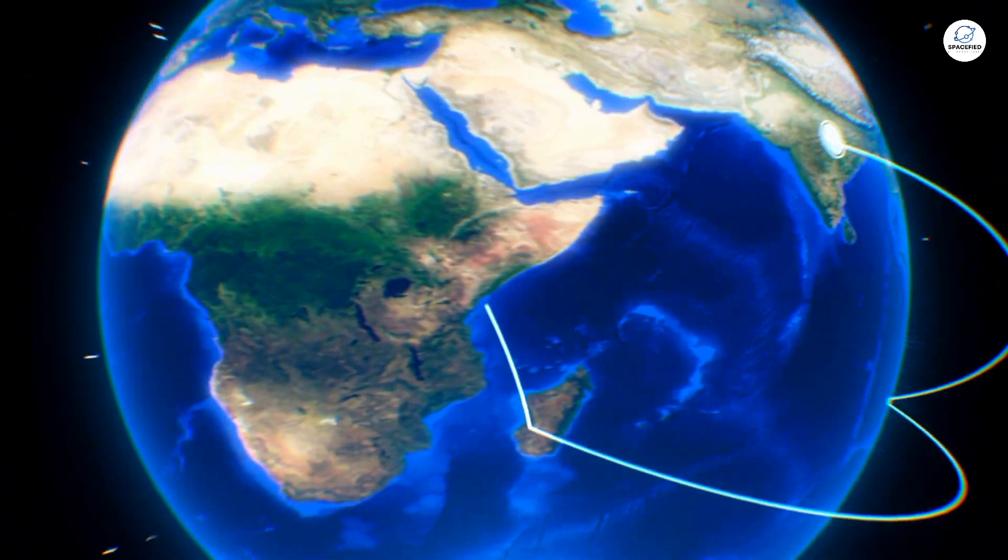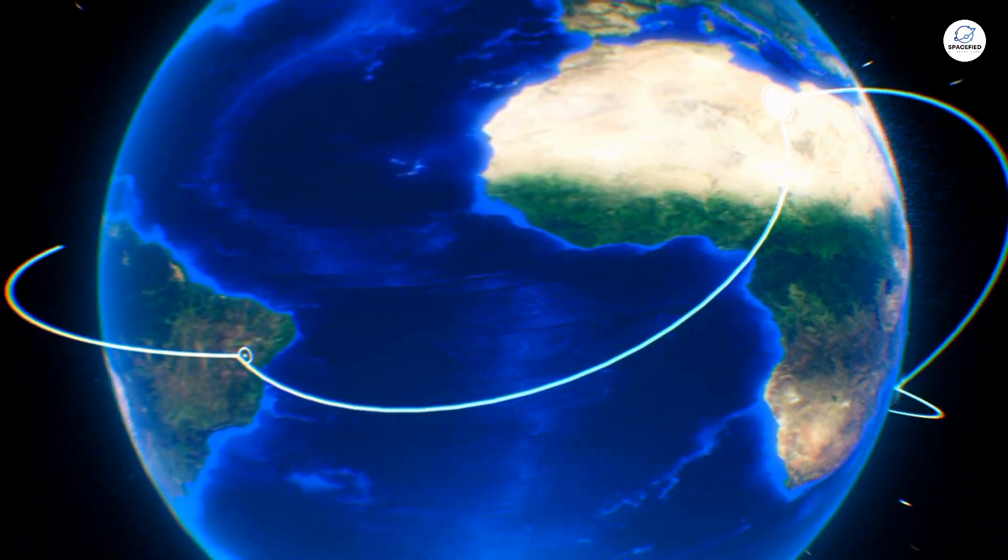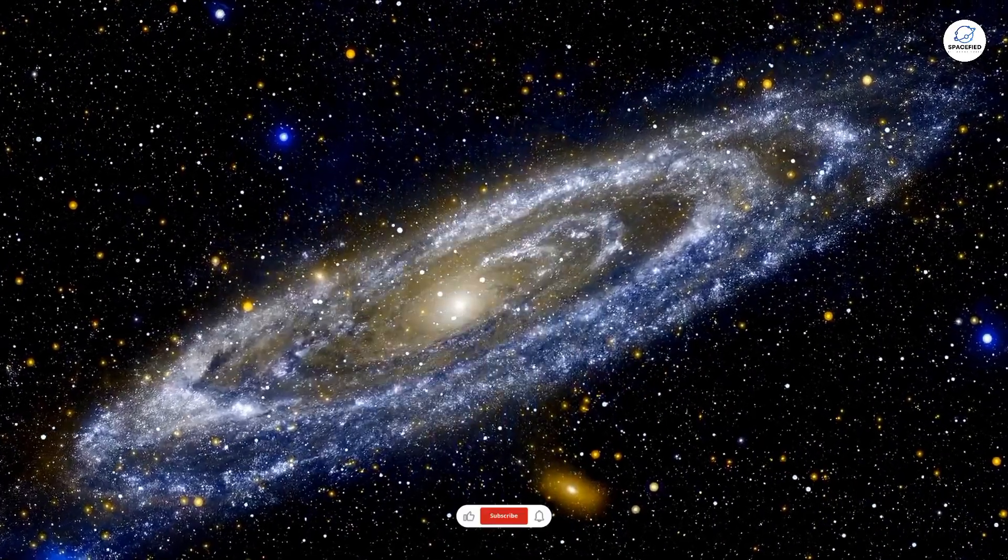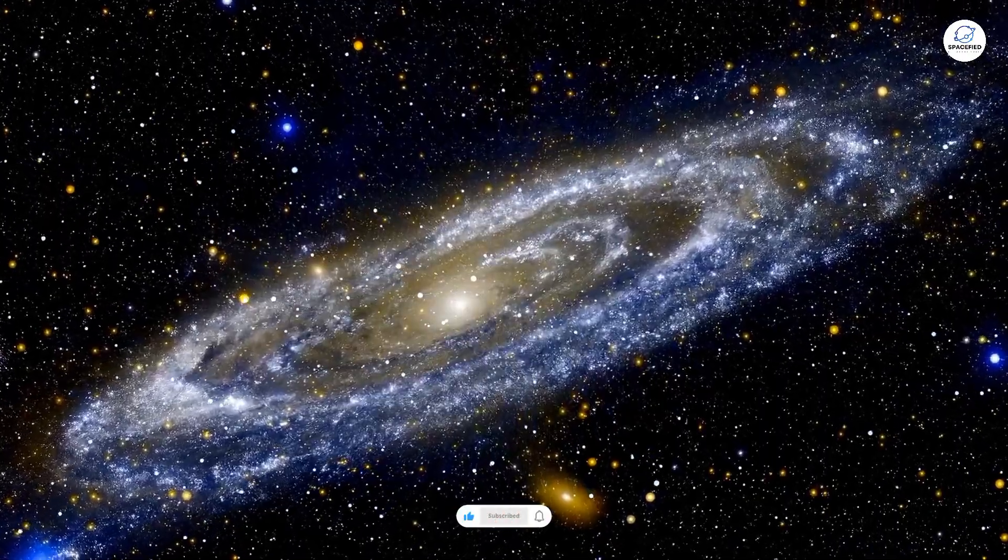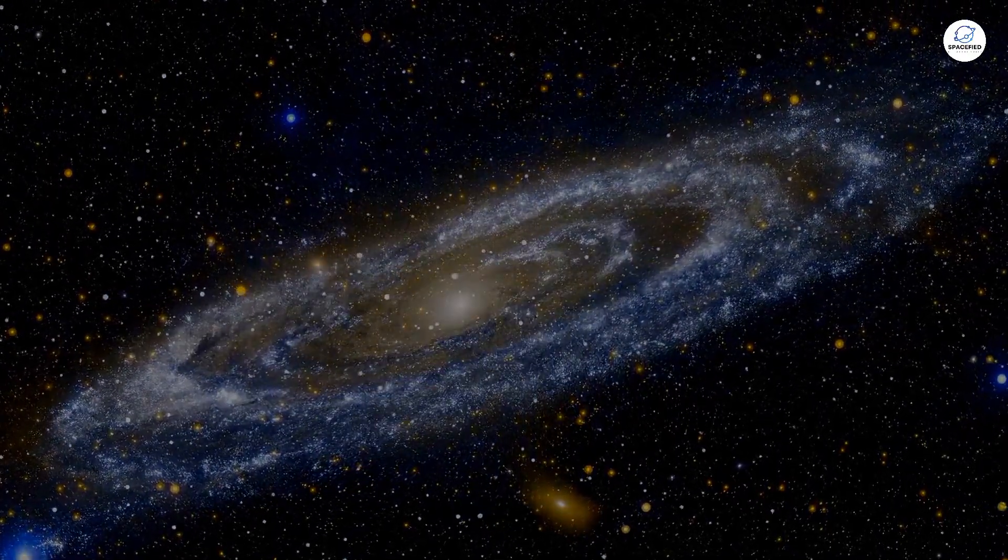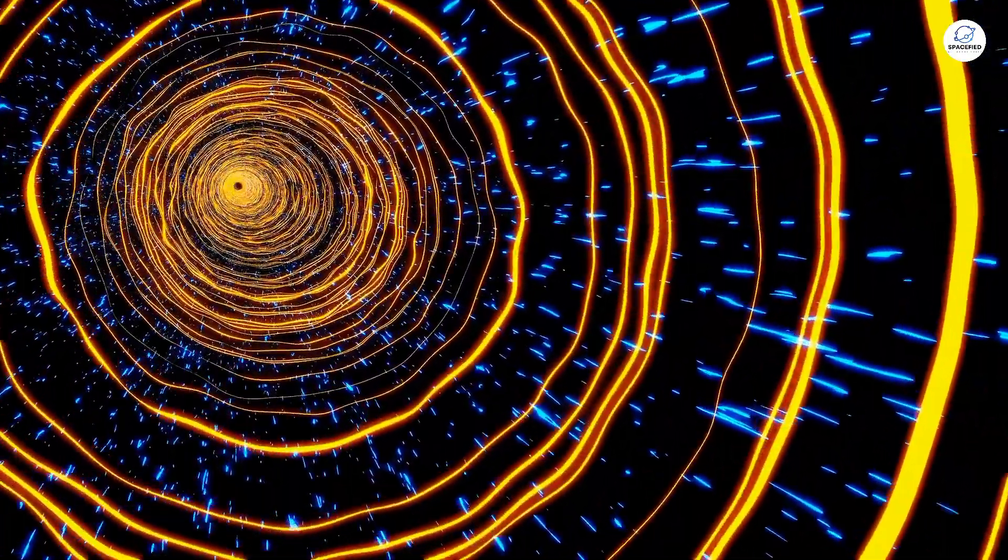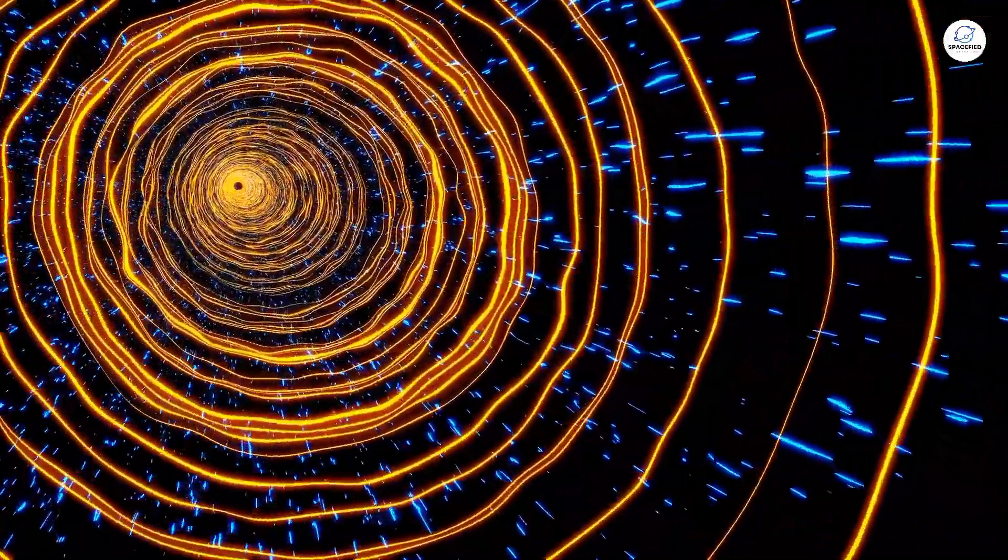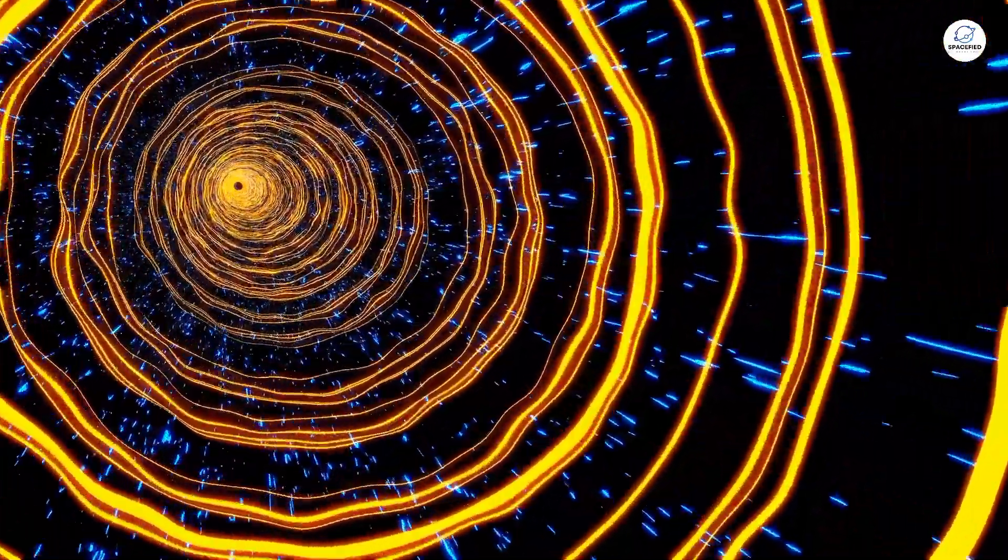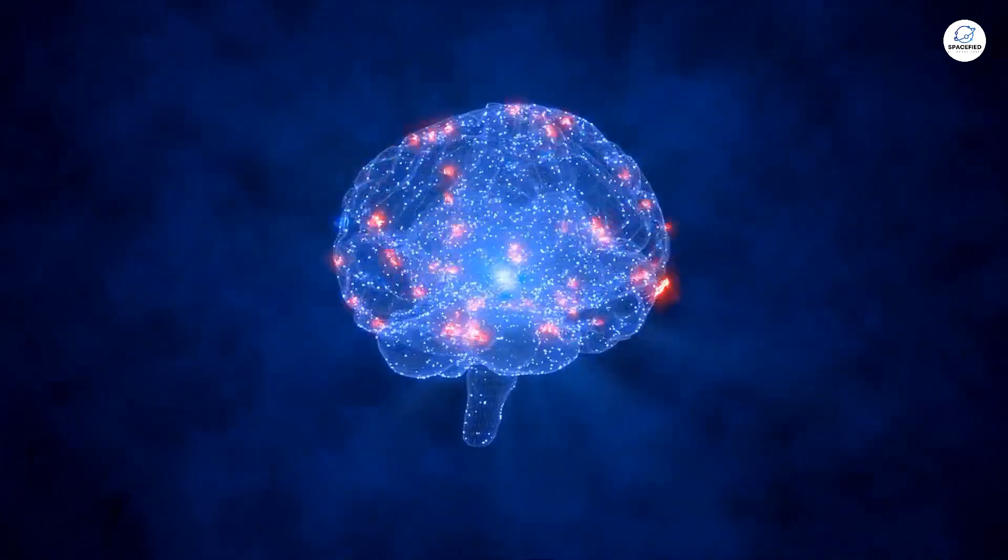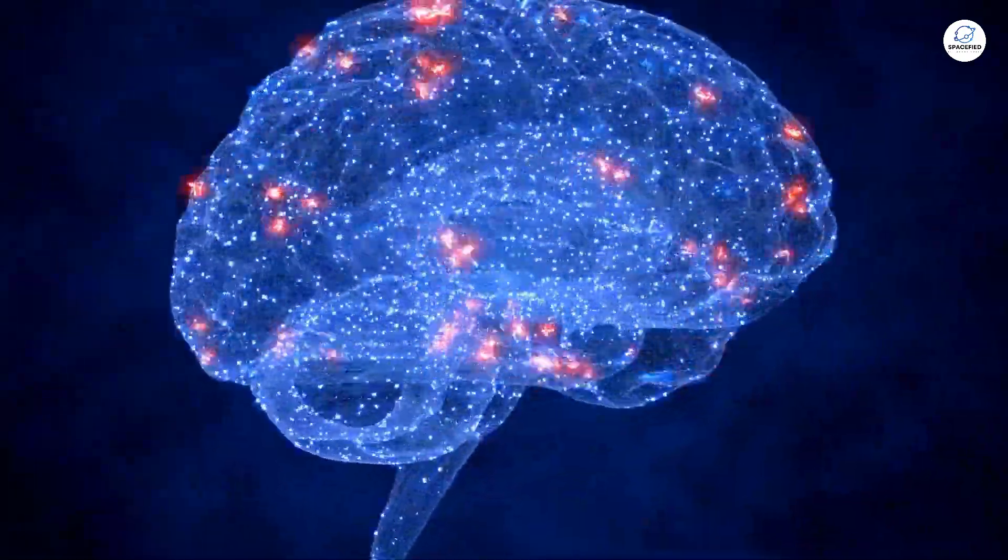Let's zoom out and look at the universe's structure. Galaxies are grouped into clusters, connected by massive filaments of dark matter. These filaments form a web-like structure, with vast voids in between. Now, compare this to the brain's neurons, which also form clusters connected by axons. The resemblance is striking.